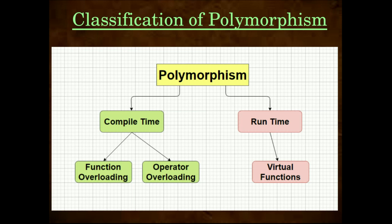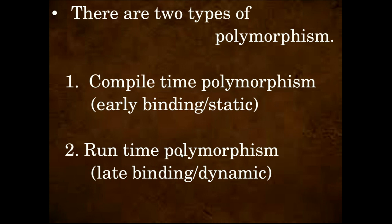Polymorphism has two types: Compile Time Polymorphism and Runtime Polymorphism. Compile Time Polymorphism is again divided into Function Overloading and Operator Overloading. Runtime Polymorphism uses Virtual Functions. Compile Time Polymorphism is also known as Early Binding or Static Polymorphism. Runtime Polymorphism is also known as Late Binding or Dynamic Polymorphism.